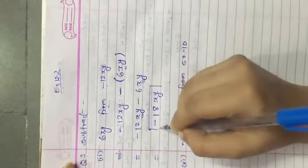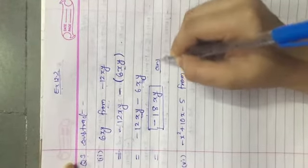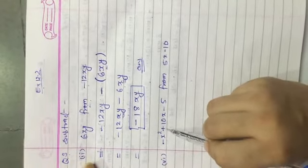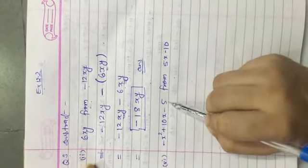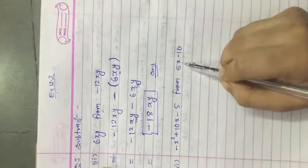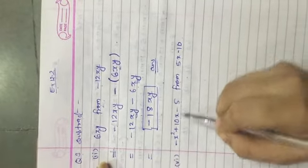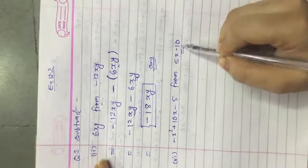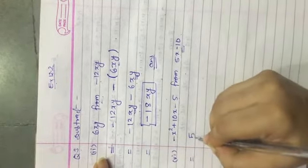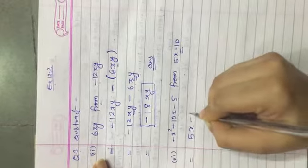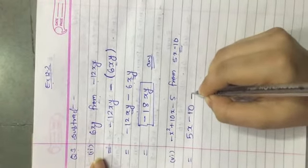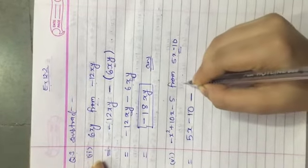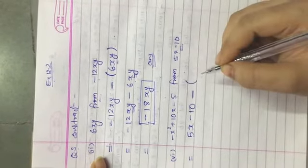Now next, subtract minus x square plus 10x minus 5 from 5x minus 10. So we have to subtract the first expression from the second expression. First we will write the second expression, then put a minus sign. When you put the minus sign, you have to write the first expression inside brackets.